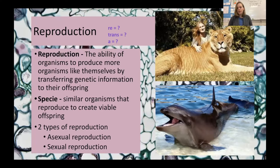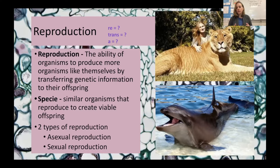Different branches of biology use different definitions for what a species is, but this is the definition we're going to focus on at this level. A species is similar organisms — they look the same, their DNA is very similar, and they can reproduce to create viable offspring. This means these organisms can reproduce and their babies can also reproduce.